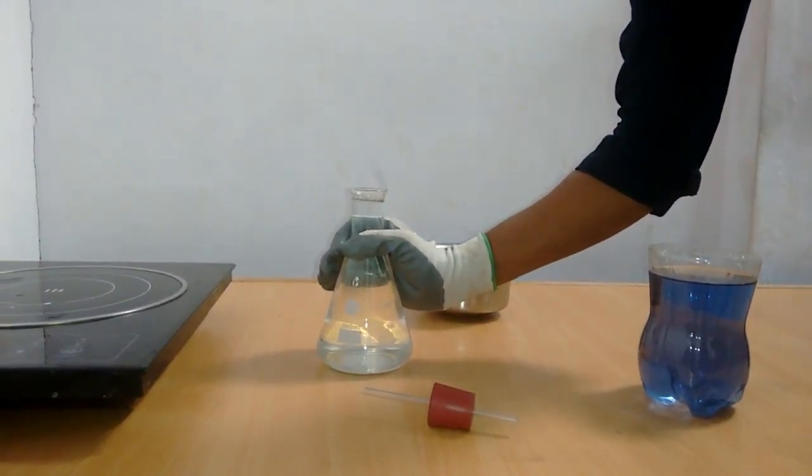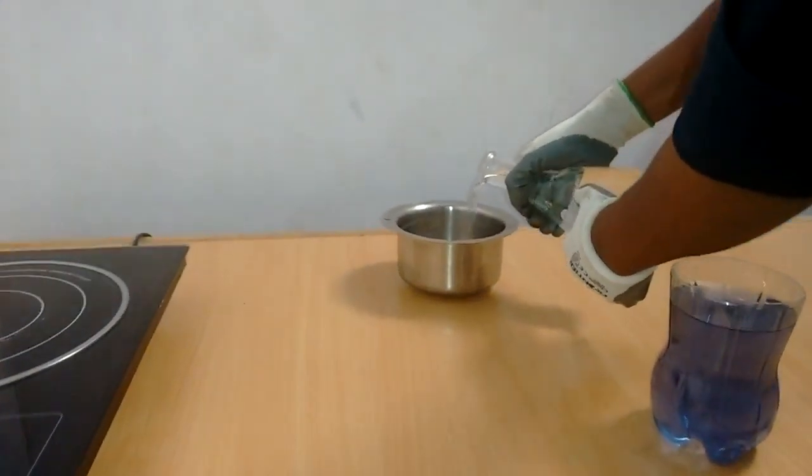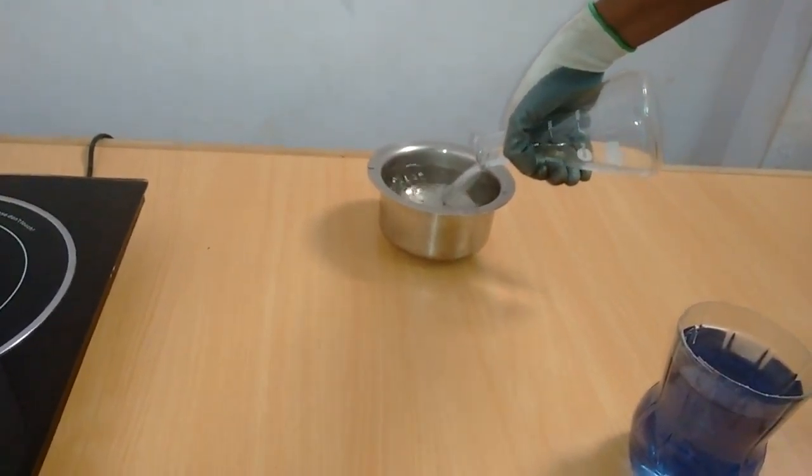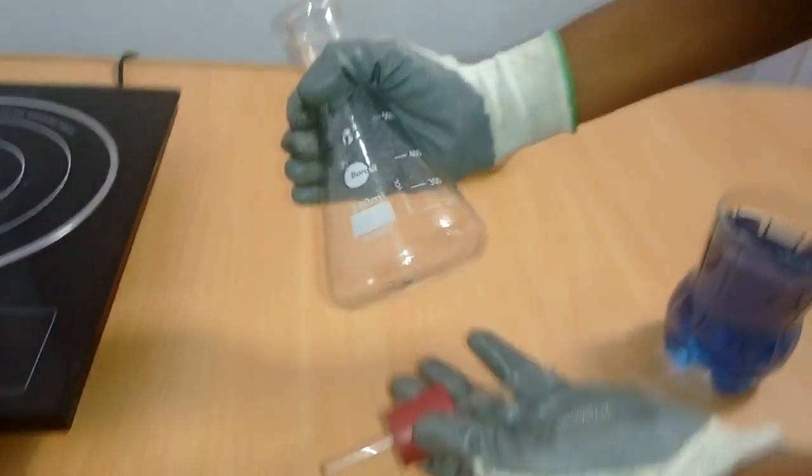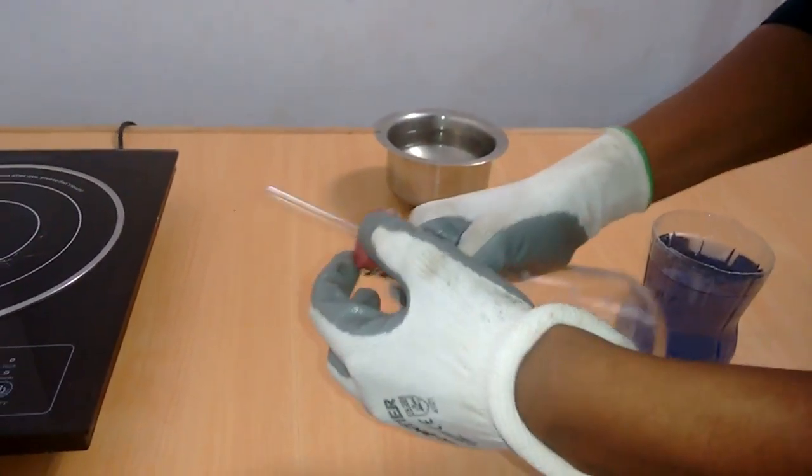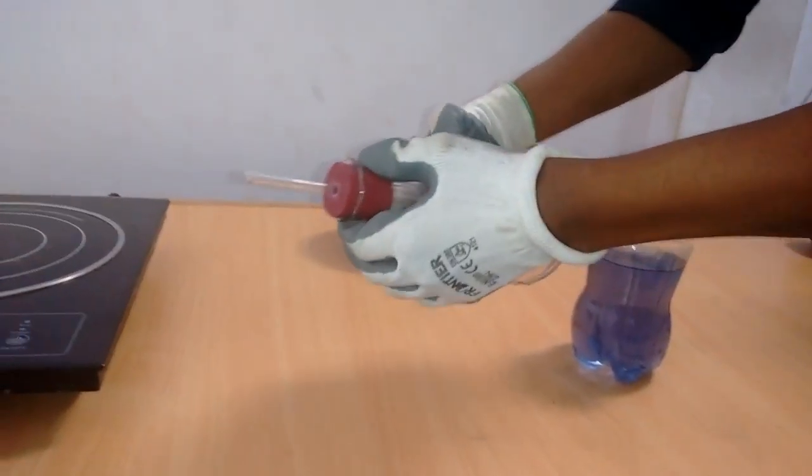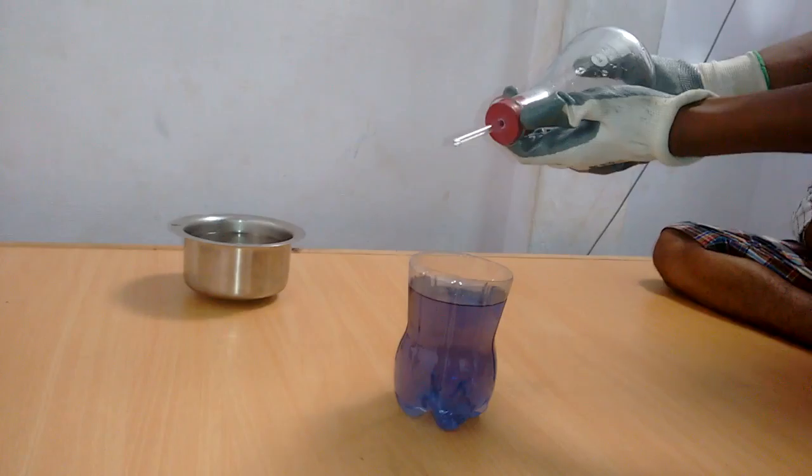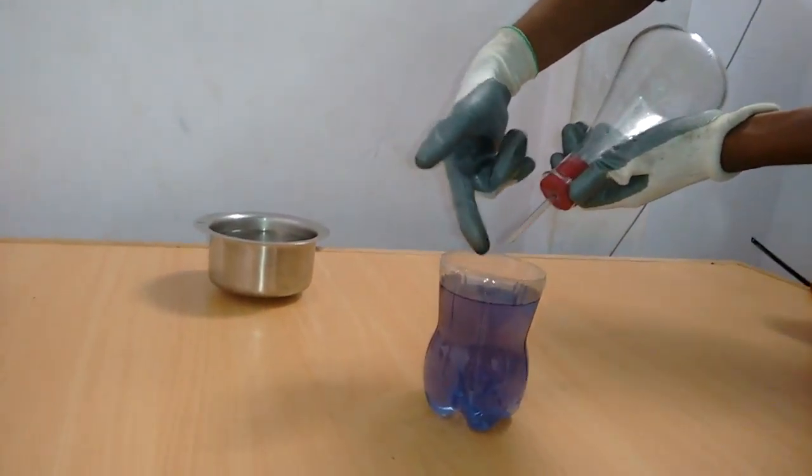Now just pour the water out. As the temperature reduces in the flask, we know the temperature is directly proportional to pressure. There will be a pressure drop in it, which causes suction in the conical tube. Now just dip this tube in the water.